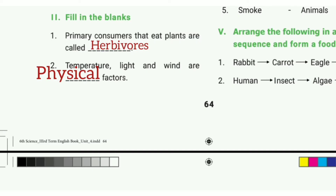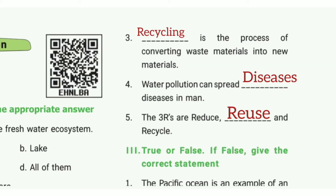Fill in the blanks. 1st one: primary consumers that eat plants are called herbivores. The answer is herbivores. 2nd one: temperature, light and wind are physical factors. The answer is physical factors.